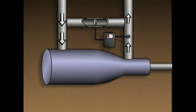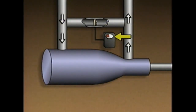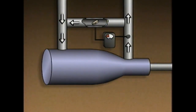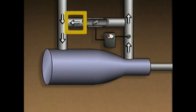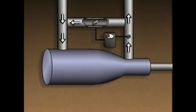When low demand causes the gas flow rate to approach the surge point, the flow sensor sends a signal to the flow controller. The controller then opens the recirculation valve and routes a portion of the discharge gas flow back into the suction piping. When a portion of the discharge gas flow is routed back into the suction piping, the gas flow through the compressor increases and it stays above the surge point.